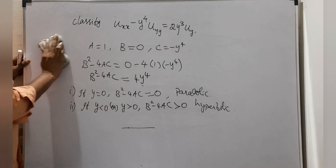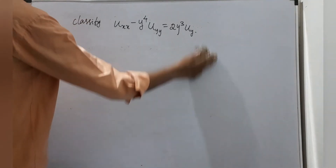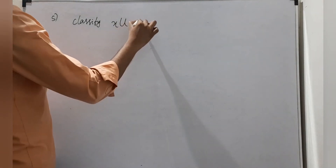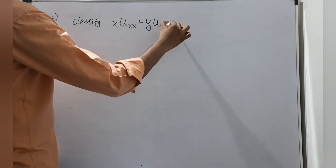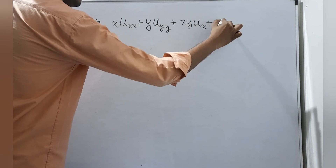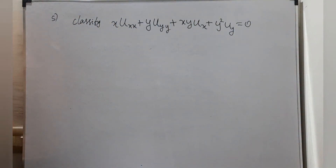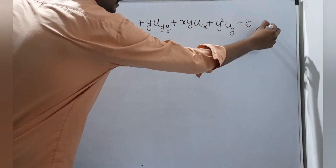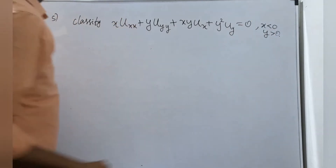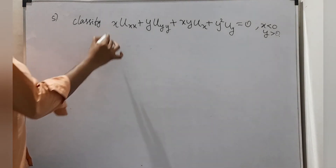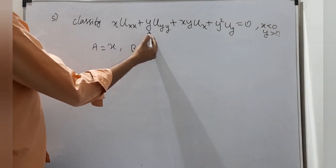Problem 5: Classify x u_xx + y u_yy + xy u_x + y²u_y = 0, given x < 0 and y > 0. The coefficient of u_xx is A = x, there is no u_xy term so B = 0, and the coefficient of u_yy is C = y. The first derivative terms are ignored.